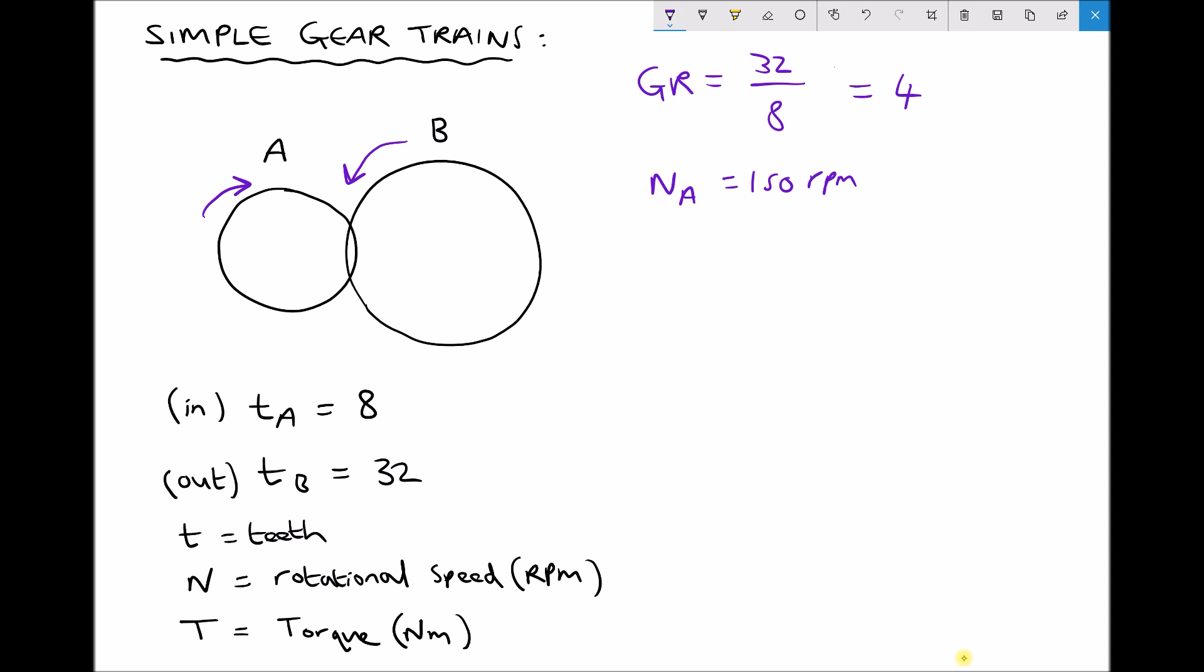So we can return to our second formula that stated that the gear ratio was the input speed over the output speed. So in this case we know that our gear ratio is 4 and we know that our input speed is 150, but we don't yet know our output speed or the speed of gear B.